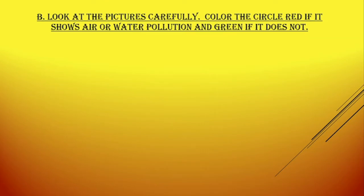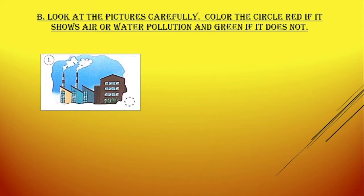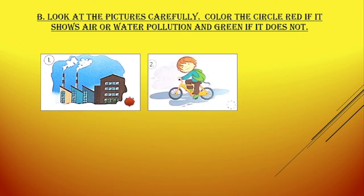Look at the picture carefully. Colour the circle red if it shows air and water pollution, and green if it does not. In this first picture, the factory is emitting a lot of smoke — this creates air pollution, hence it has to be coloured red. In this picture, the boy is riding a bicycle which does not create any pollution, hence it should be coloured green.